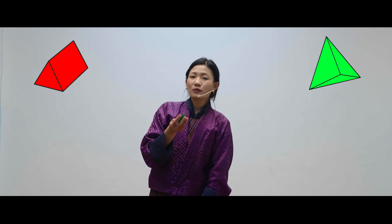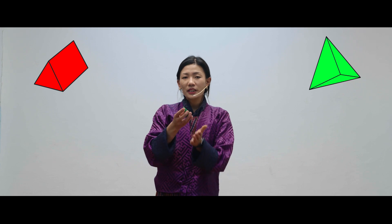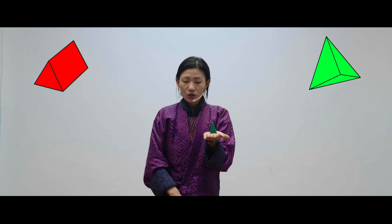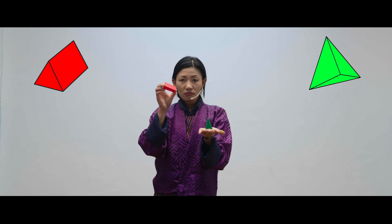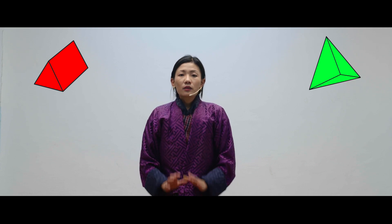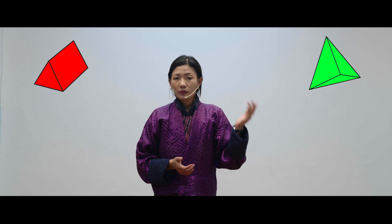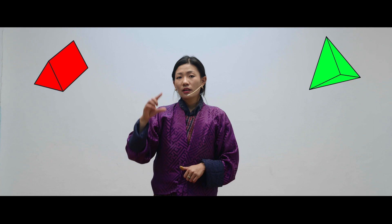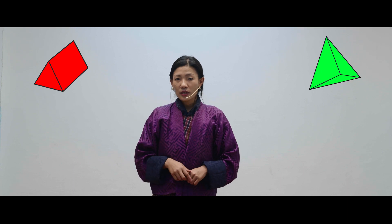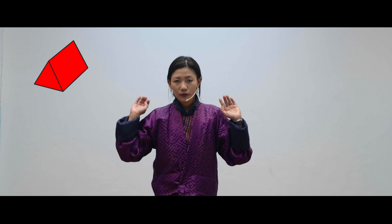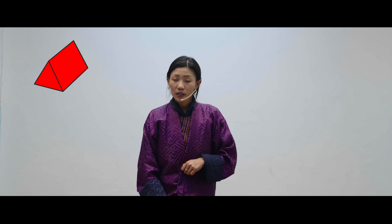There is something special about a pyramid — it has a top vertex here, called the apex, which a prism doesn't have. These shapes, like we said earlier, have faces, edges, and vertices. Let's count the number of faces, edges, and vertices for these two shapes.